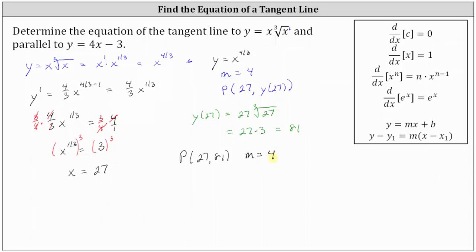We have all the information we need to find the equation of the tangent line. Using point-slope form first — x₁ is 27, y₁ is 81, and m is 4 — the equation of the tangent line is y minus 81 equals 4 times the quantity x minus 27. This is the equation of the tangent line to the given function that is parallel to y equals 4x minus 3.